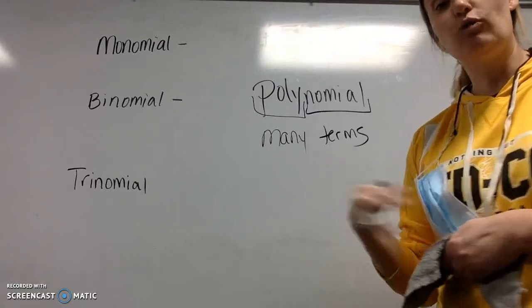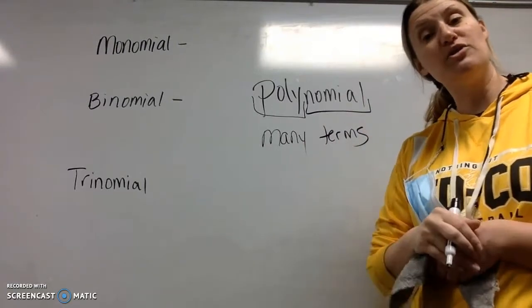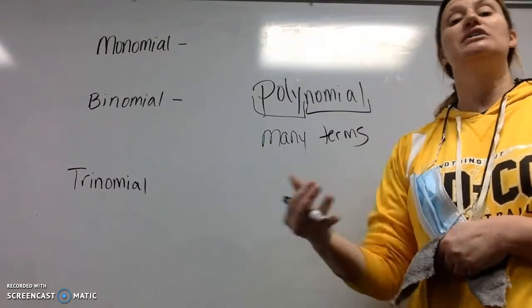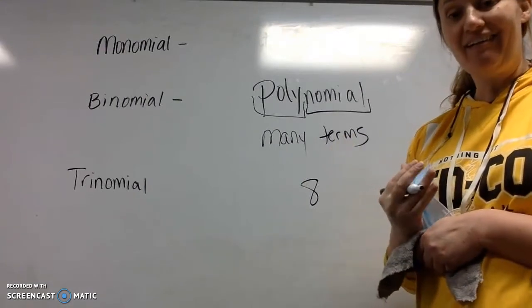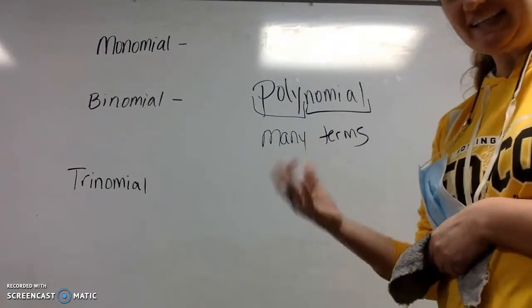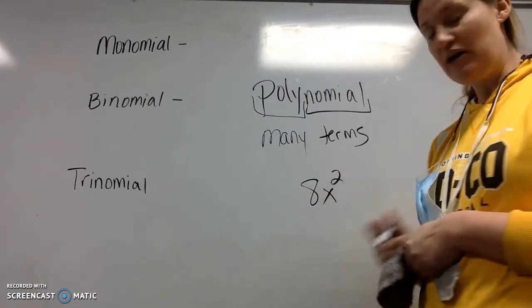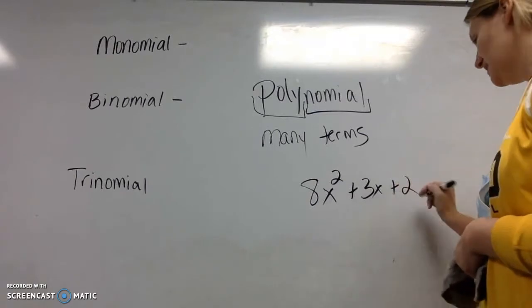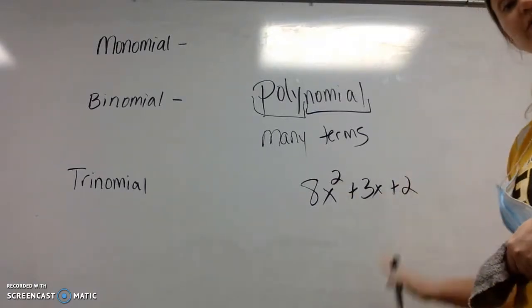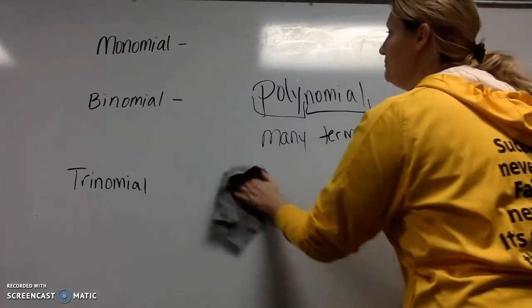We've already had a video where we reviewed what a term is and the coefficient and the variable, and a number that stands by itself, the constant, is also a term. So the number 8 is technically a polynomial. So again, you've been dealing with these forever. 8x, 8x squared, 8x squared plus 3x, 8x squared plus 3x plus 2, all of those are examples of polynomials.